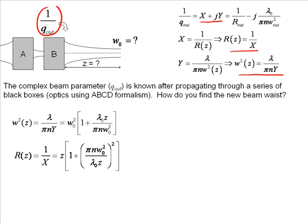Now you'll notice I have two equations and two unknowns. I know x and y because I've calculated 1 over q out for my input q. So I've got x and y, and the two variables I want to find are w naught and z. I've got a w naught and a z right there. So it's a simple matter of two equations and two unknowns.